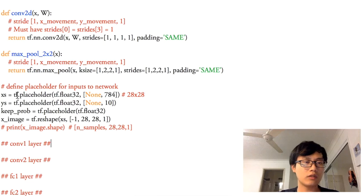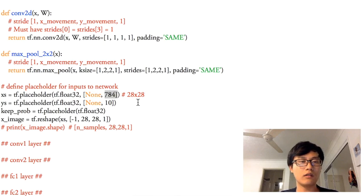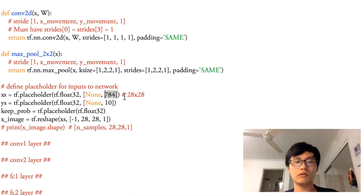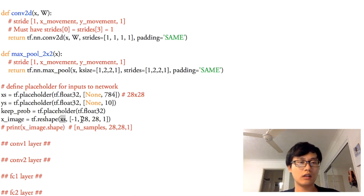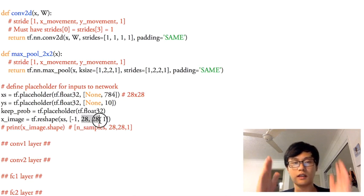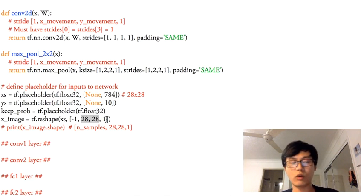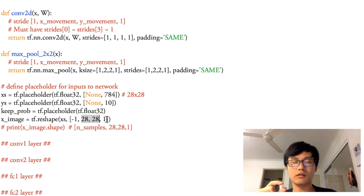We're going to create a placeholder for x and a placeholder for y. The MNIST data will have 784 pixels in each image, which is 28×28 in length and width. So we're going to reshape the axis to 28×28×1 — that's the length and height of the image. Because this image is black and white, it has just one channel.